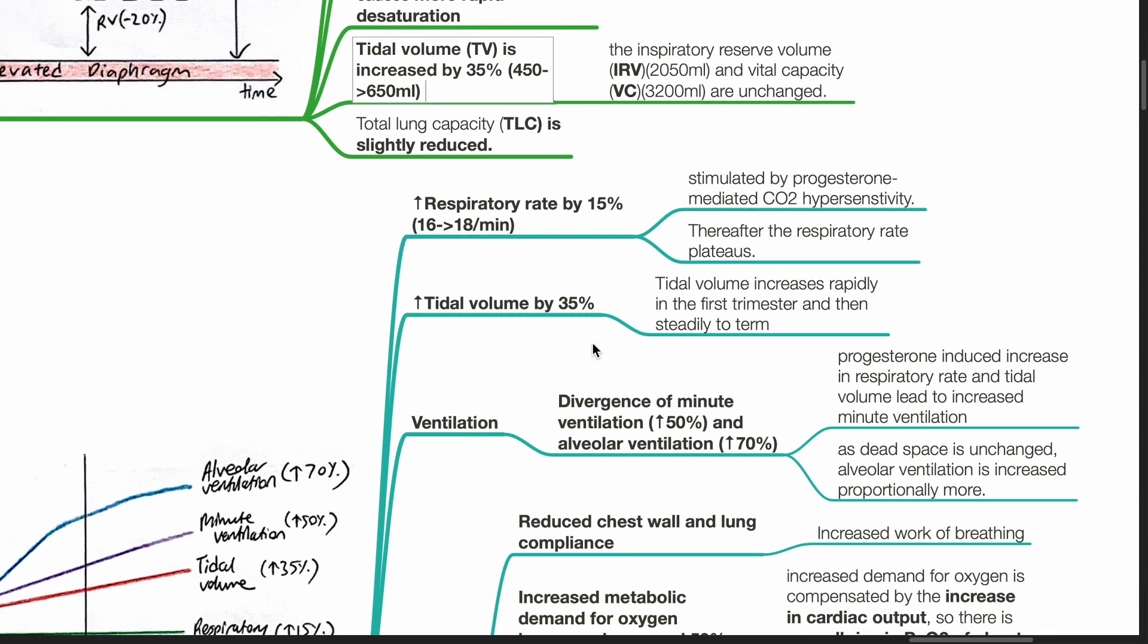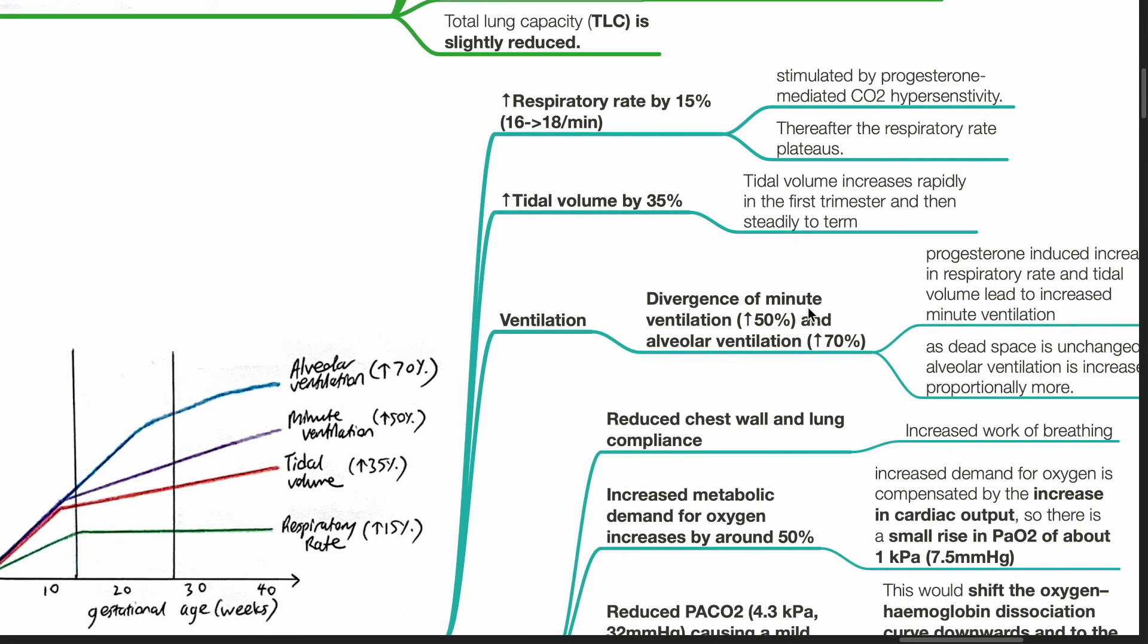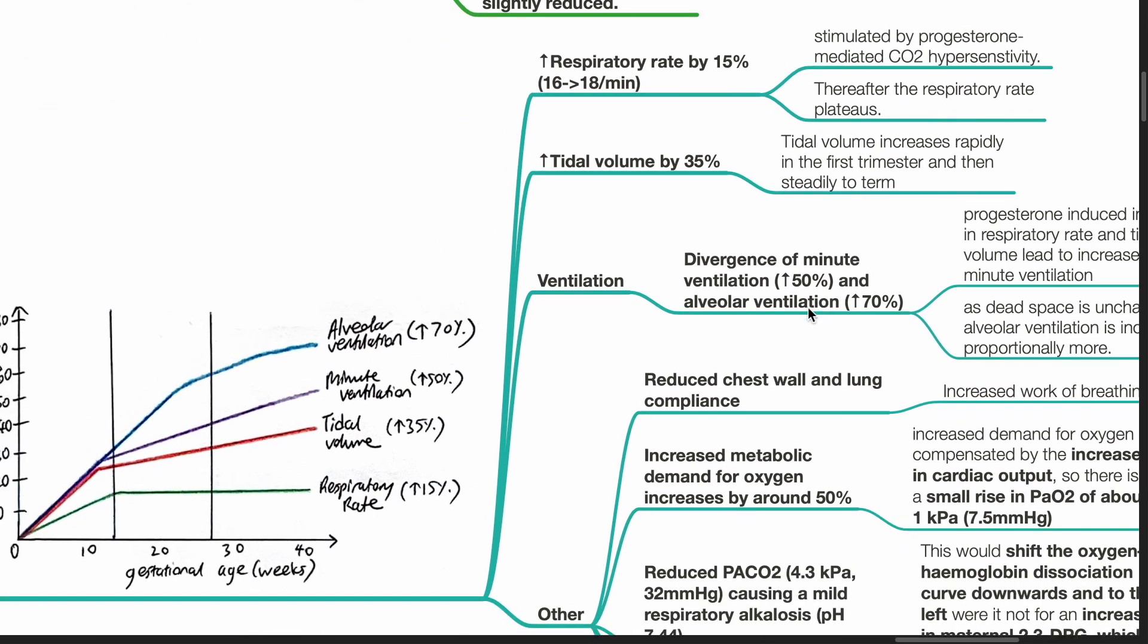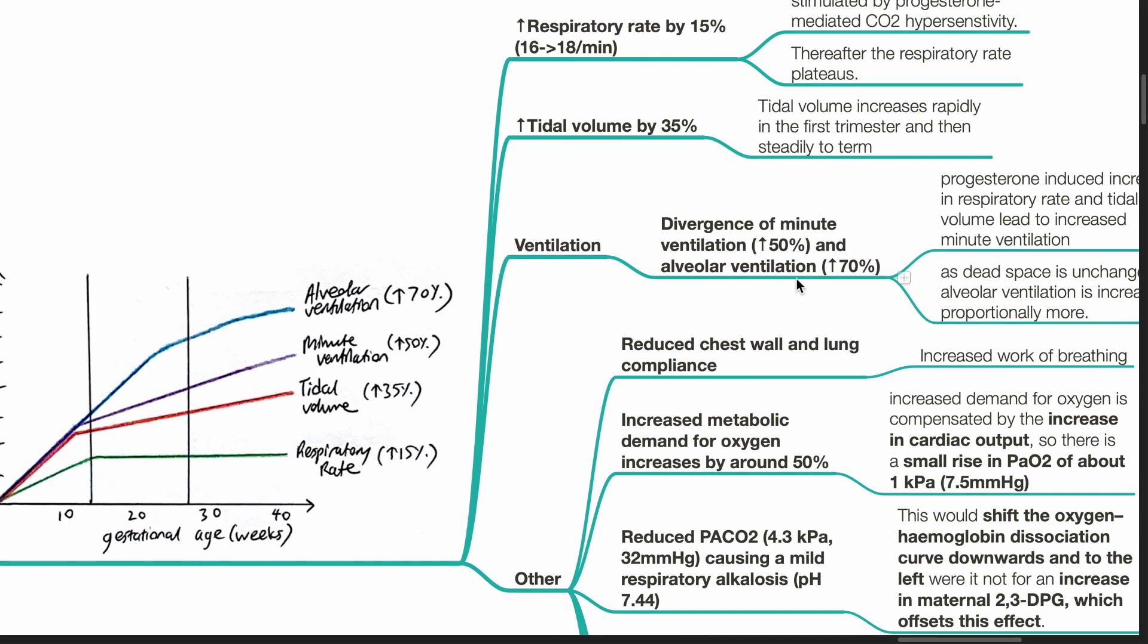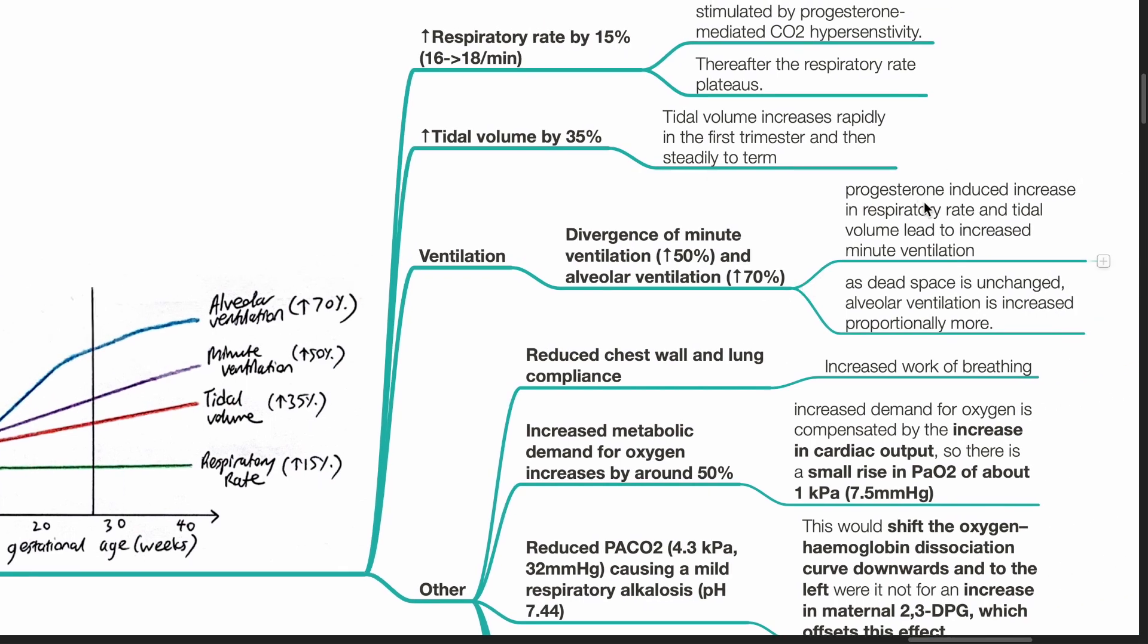Tidal volume increases by 35%, increasing rapidly in the first trimester and then steadily to term. Divergence of minute ventilation and alveolar ventilation is due to progesterone-induced increase in respiratory rate and tidal volume, which leads to increased minute ventilation.